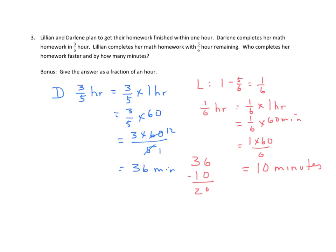Bonus, it says give the answer as a fraction of an hour. Well, we have Darlene with three-fifths of an hour. And we determined that Lillian completed hers in one-sixth of an hour. So we have fractions as opposed to using whole numbers with minutes. So we have three-fifths minus one-sixth. And that's the same as, what's our common denominator. It would be thirtieths. So I have eighteen-thirtieths minus five-thirtieths. And my difference is thirteen-thirtieths, which should be the same as twenty-sixth over sixty. And that's the other way we could have done that. We could have just changed my difference here to twenty-sixth out of sixty. And that would simplify to the same as thirteen-thirtieths. There's often and usually more than one way to solve a problem.